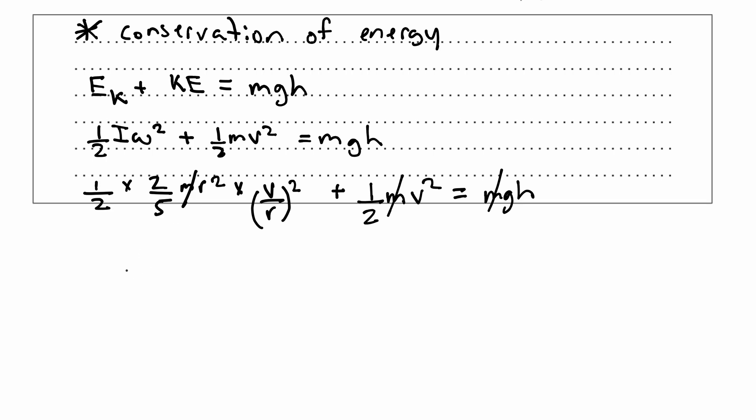Let's combine the equation. Let's make it look a bit simpler. I can say ½(2/5)r² times v²/r² plus ½v² is equal to gh. All I need to simplify.